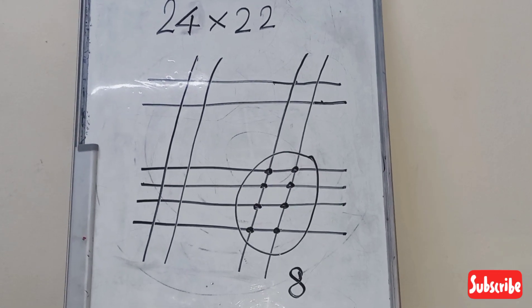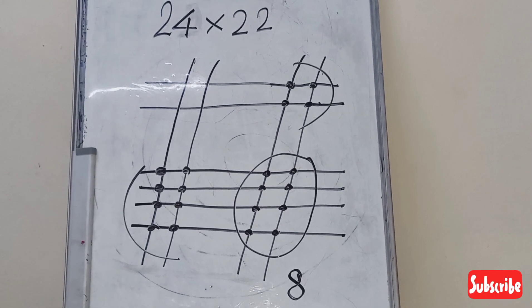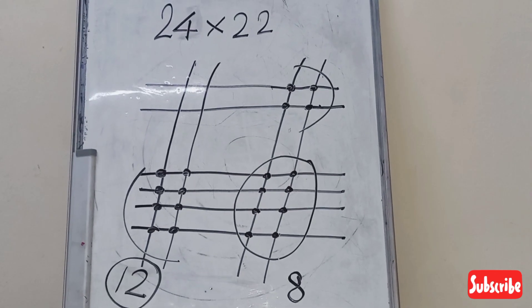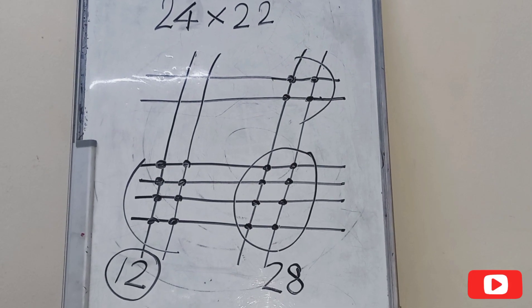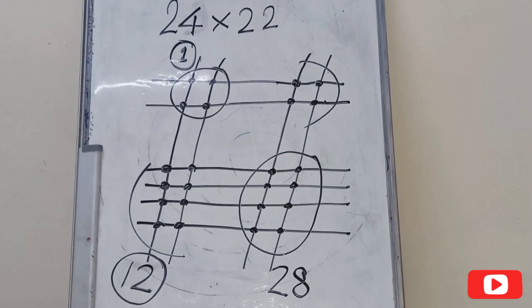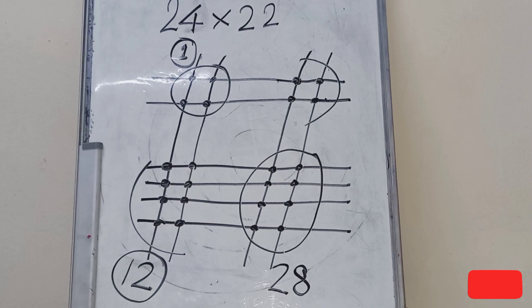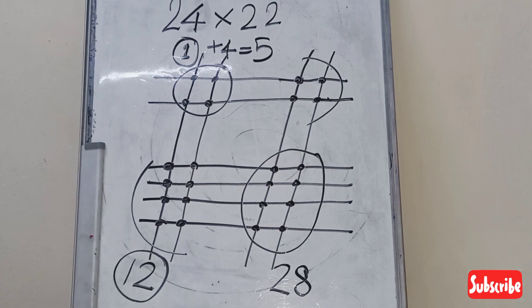Totally there are eight points. Now count diagonally. Totally there are 12 points. Write only two and carry one on top. Now count on the top. There are four points. Add one with it, totaling five. Now write the five on the left of two.